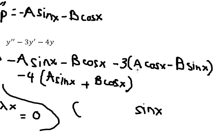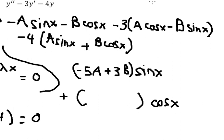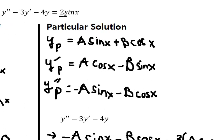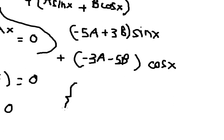For sin x terms: we have -A from the second derivative, +3B from the first derivative, and -4A, giving -5A + 3B. For cos x terms: we have -B, -3A, and -4B, giving -5B - 3A. The right-hand side has only 2 sin x, so -5A + 3B equals 2 and -5B - 3A equals 0. We now create the system of equations.